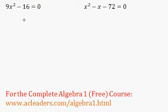Let's continue to solve by factoring. Here we have 9x squared minus 16 equals 0. What I'll do here is recognize a difference of two squares.